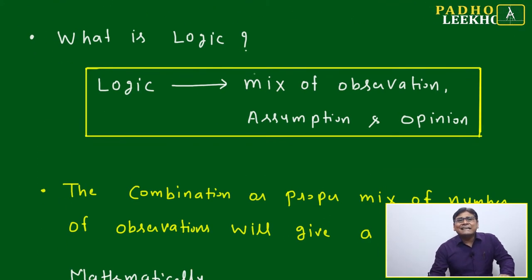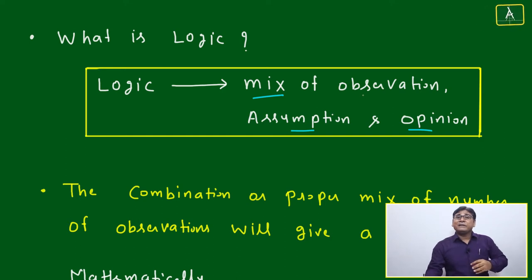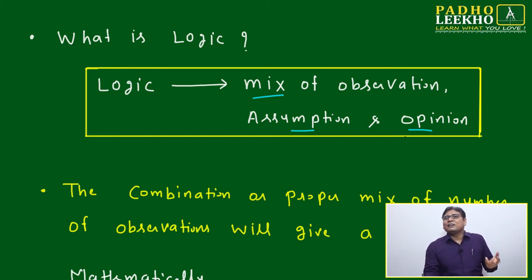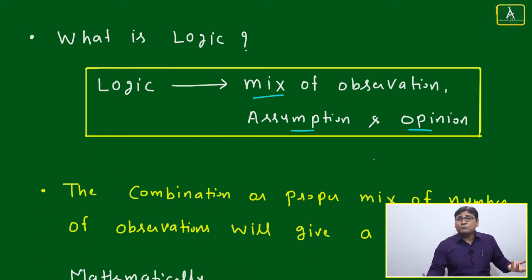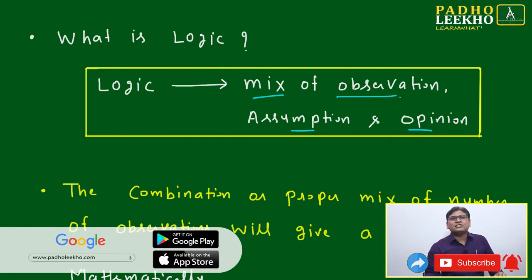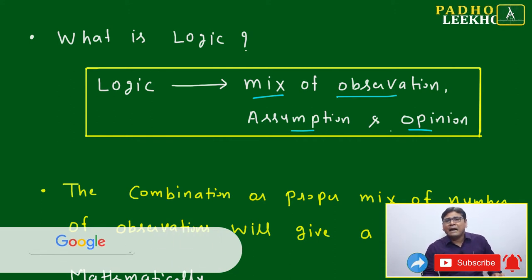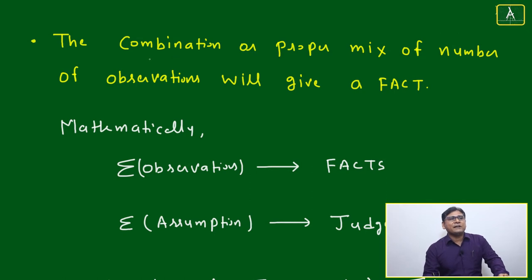In a nutshell, logic is a mix of observation, assumption, and opinion. Observation itself is a very complex biological, sociological, philosophical, and psychological mix. Everybody will see the same thing, but one person may become a terrorist while another becomes a nationalist — it depends on how observation enters the brain and how the brain processes and makes conclusions based on sociological factors.